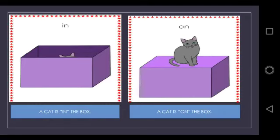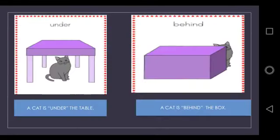In next picture, a cat is on the box. The word on tells us where the cat is. The cat is on the box.